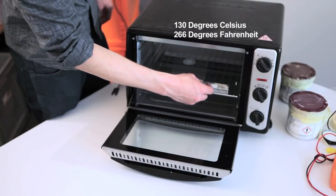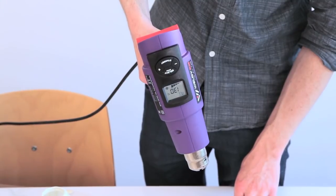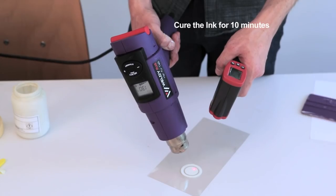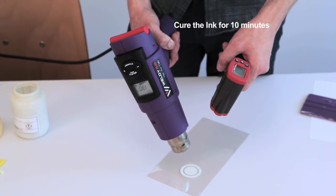We'll need to heat the inks to 130 degrees for 10 minutes to cure them. We can use an oven to do this, or a heat gun. Use a thermometer to check that you're reaching 130 degrees, and be careful not to go too far over.